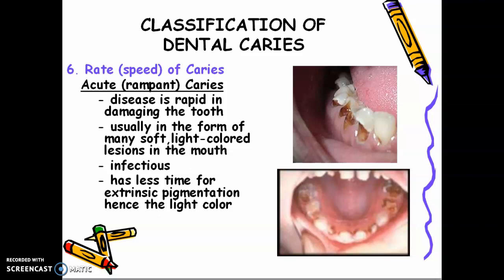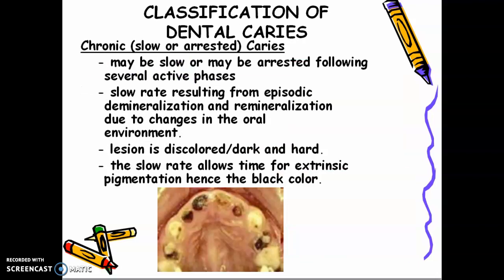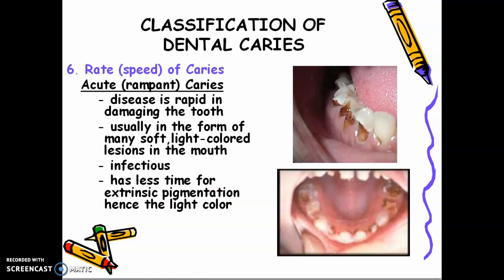Number six is classification based on the rate or speed of caries. We have acute caries or chronic caries. For acute or rampant caries, the disease is rapid in damaging the tooth. Children with rampant caries on almost all teeth tend to have painful teeth and frequently miss school. Usually the lesions are many, soft, and light-colored. Using a spoon excavator, you can easily excavate the caries. They have less time for extrinsic pigmentation, hence the light color.